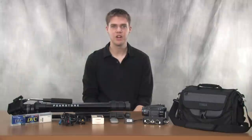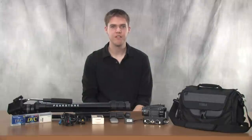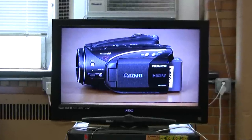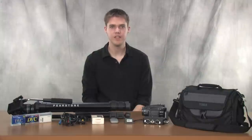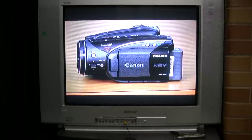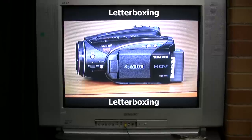HDV and standard definition are both widescreen formats with a ratio of 16 by 9, but the biggest difference between the two is size and quality. When shooting with either standard definition widescreen or high definition, the video should fill the entire screen on all modern widescreen televisions. On an older square TV, if you play the videos in widescreen, both the standard definition and high definition videos will have black stripes above and beneath the video, which is known as letterboxing.